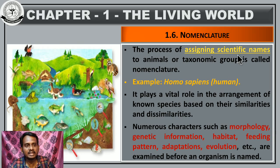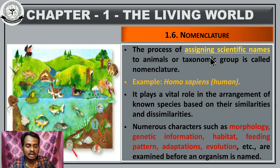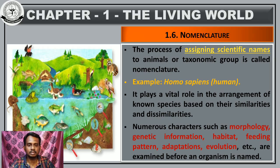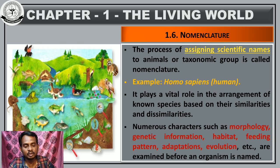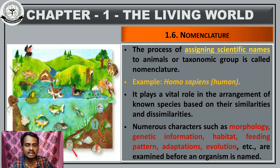The process of assigning the scientific name is called nomenclature, because every organism is called by different names in different areas. For example, birds in Tamil are called 'paravai', but in English they are called 'bird'. In different areas the bird may be called by different names. So scientists assign a common, universally accepted name — that is the scientific name assigned to animals.